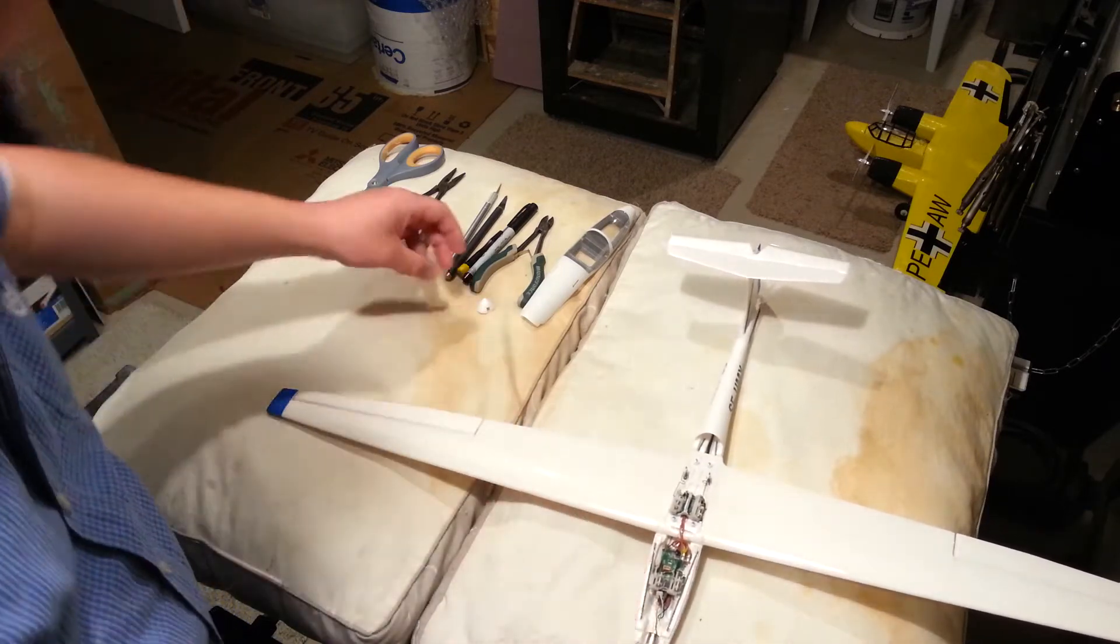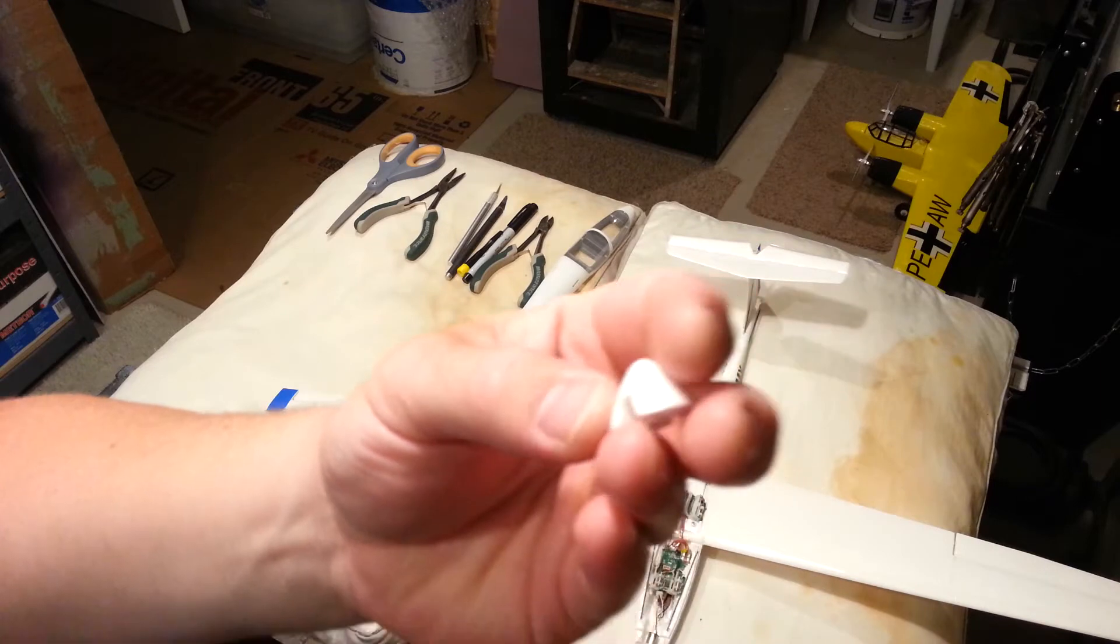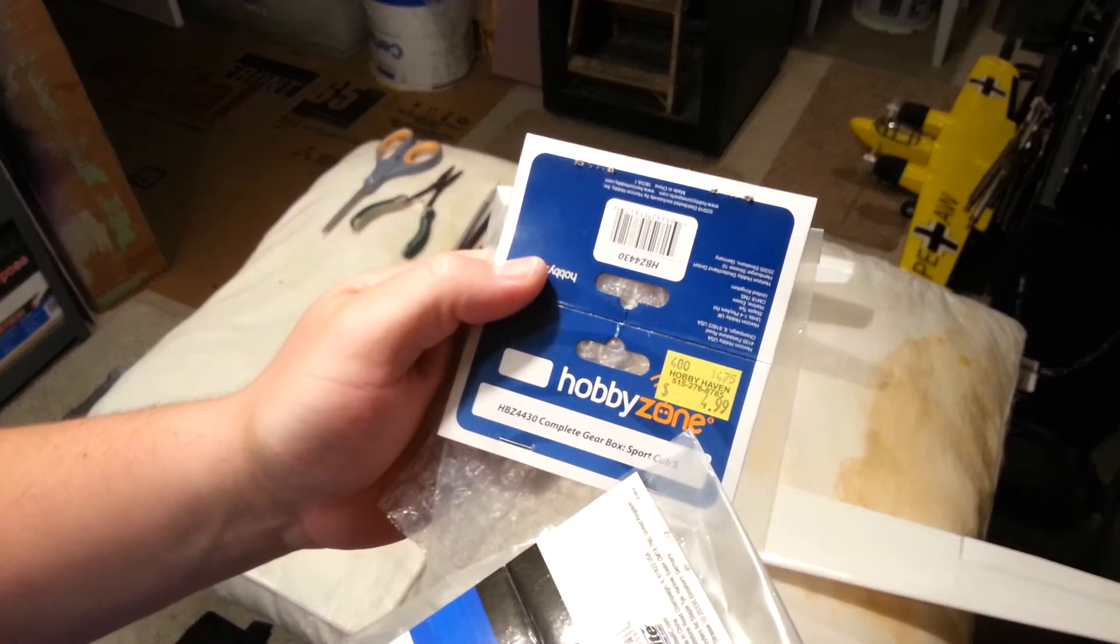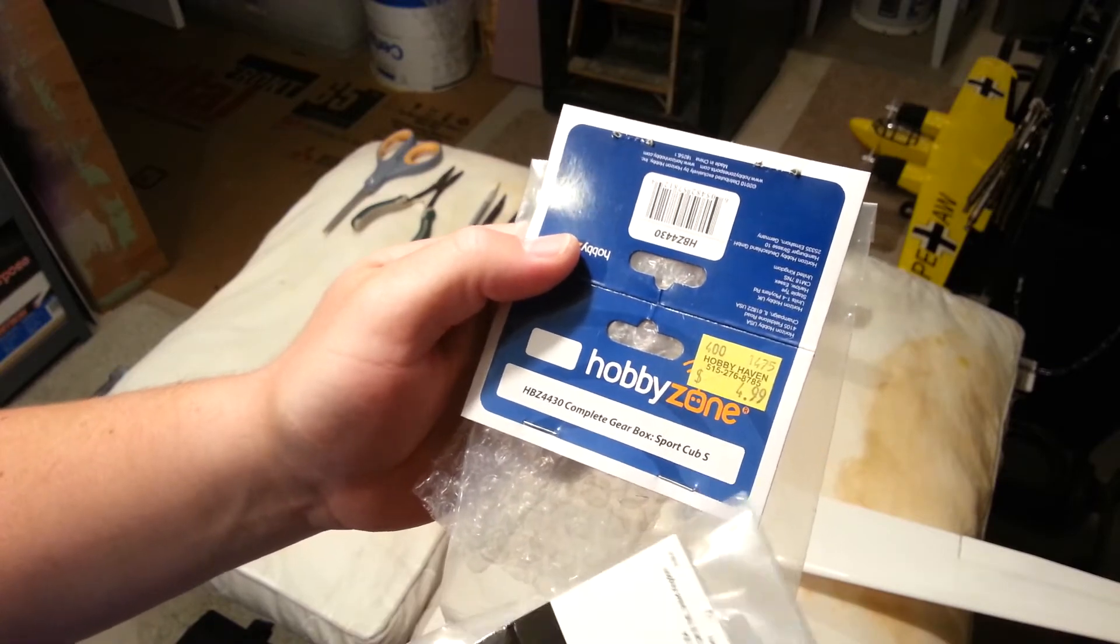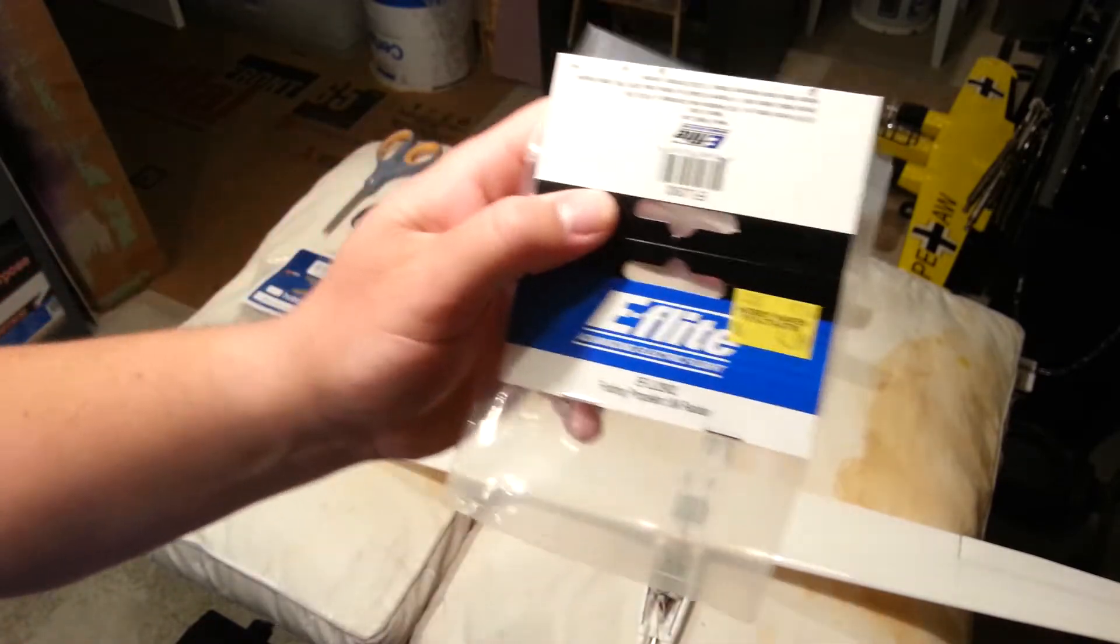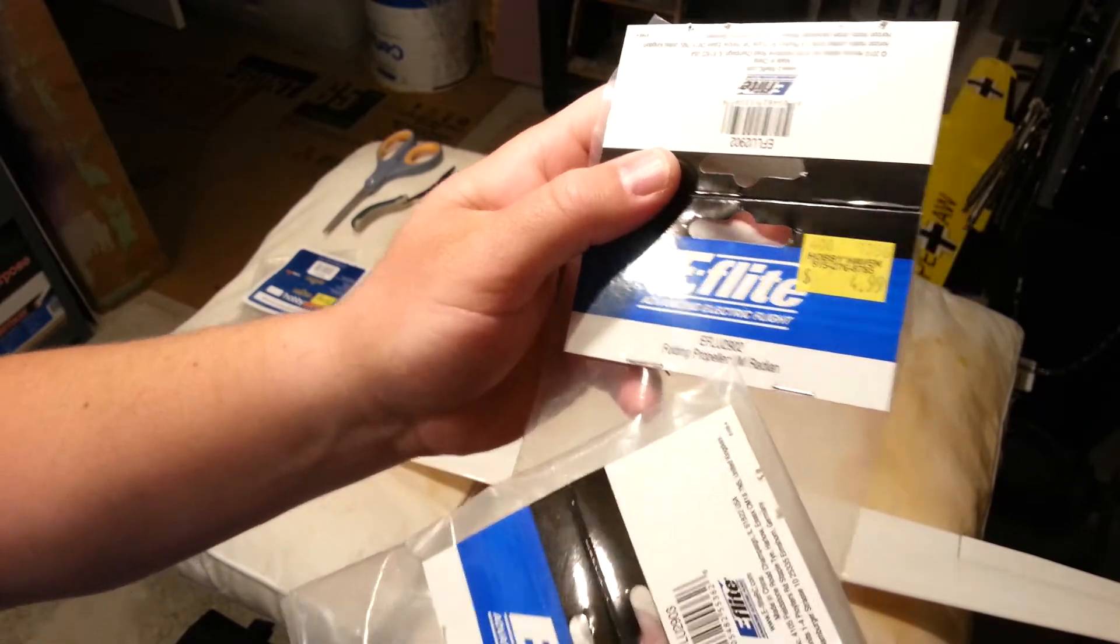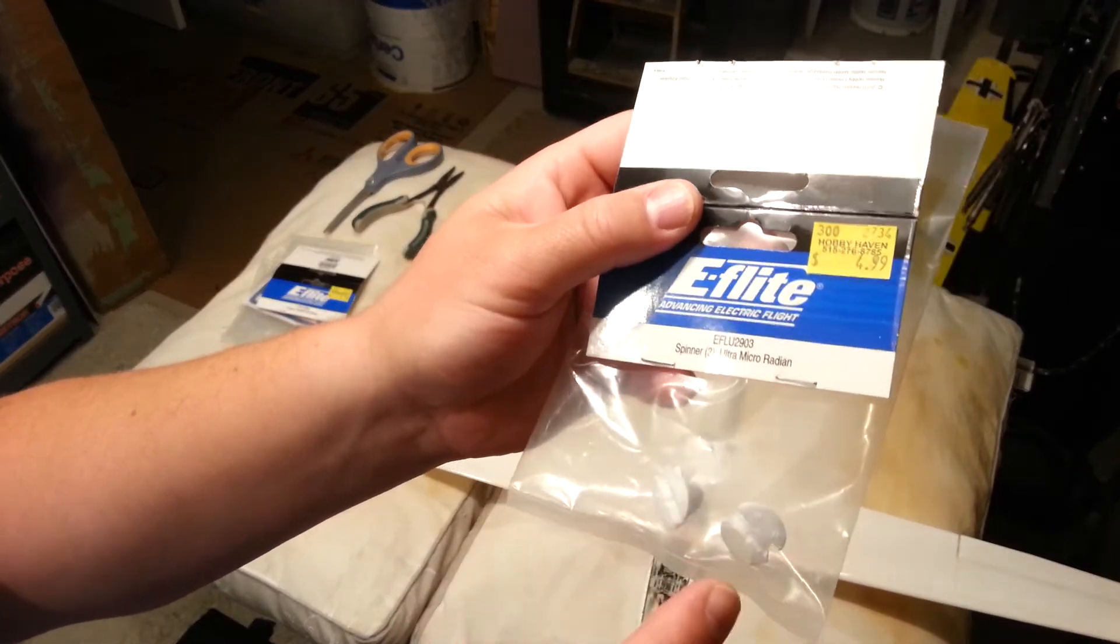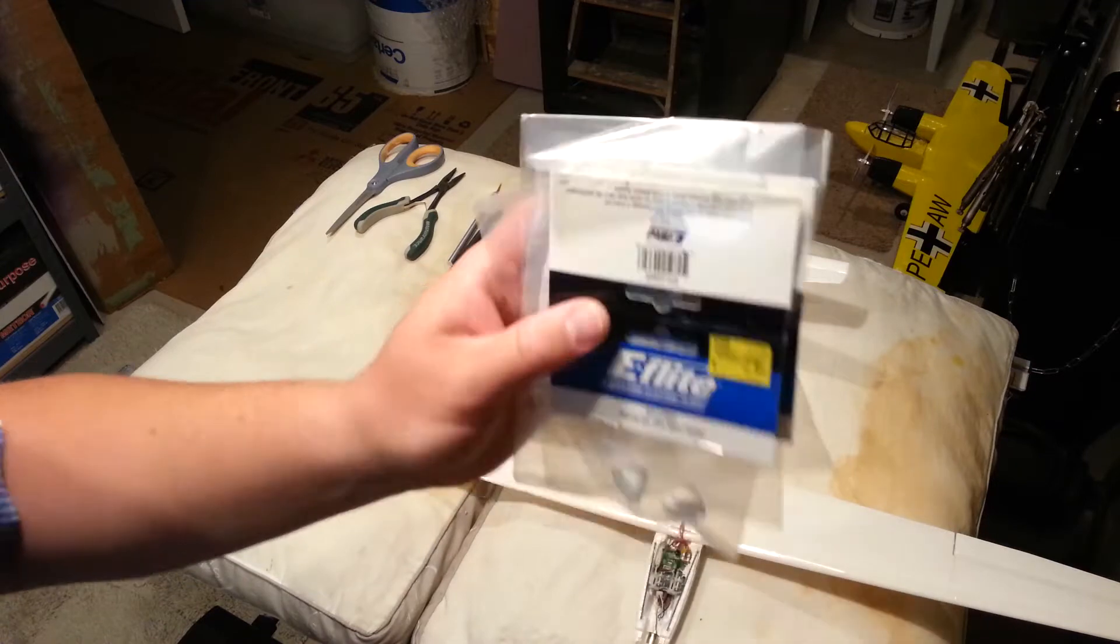Let me show you what I've got for packages. This was a Hobby Zone part, about five or six bucks now. This is a complete gearbox for the Sport Cub S UMX. This is the folding prop for the UMX Radian—they forgot the X in there. You can see the part number there, and that was five bucks. Then I've got these spinners which were five bucks for the ultra micro Radian.